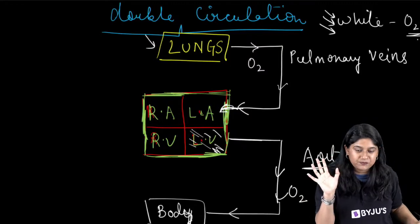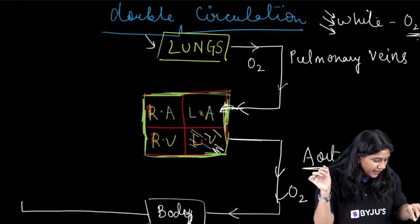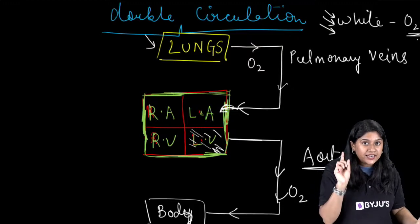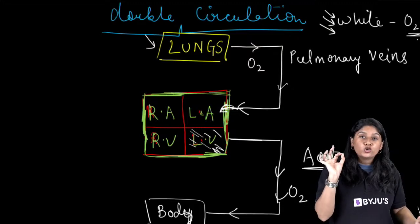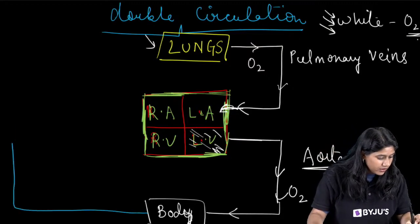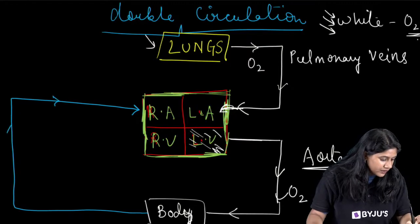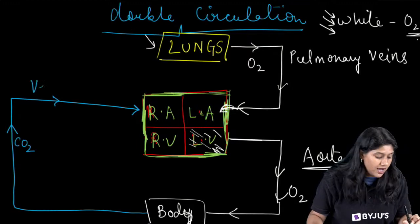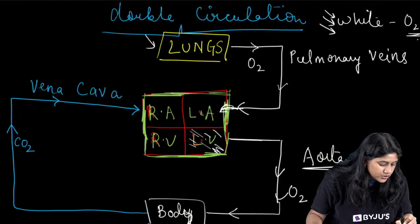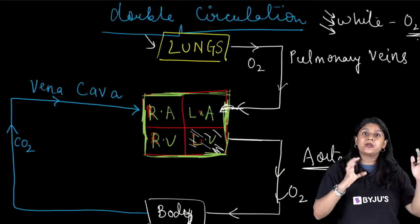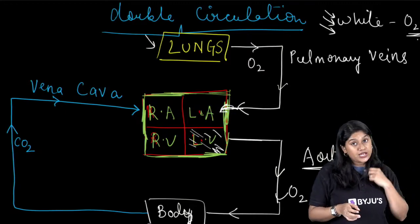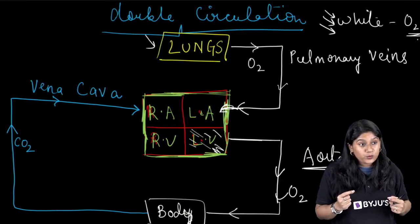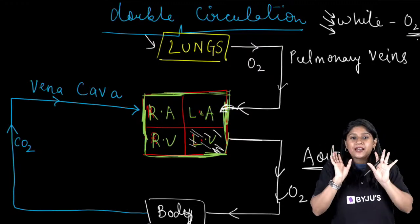Now you tell me — which vein carries the carbon dioxide-rich blood to the right atrium? The answer is the vena cava. Vena cava carries all the carbon dioxide-rich blood and gives it to the right atrium. In this structure, we are not focusing on superior and inferior vena cava — we are understanding the concept.